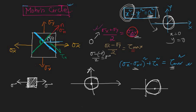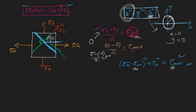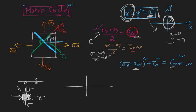Third example: a body under hydrostatic pressure at depth h beneath a water surface. Hydrostatic pressure is compressive and equal in all directions, so σx = σy = −σ. Therefore σ_avg = −σ and τmax = (−σ − (−σ))/2 = 0. The Mohr's circle degenerates to a single point on the negative σ-axis — a Mohr's point.